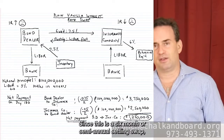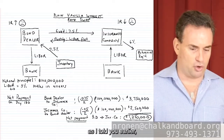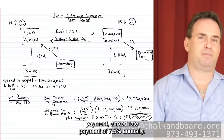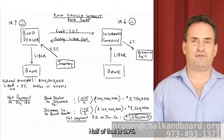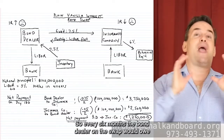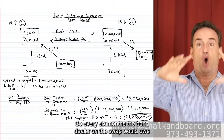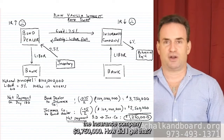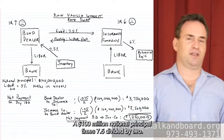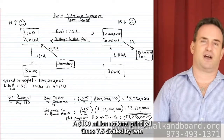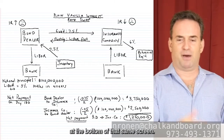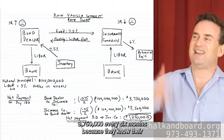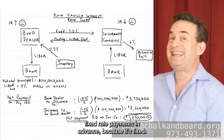Since this is a semi-annual settling swap, the bond dealer must make a fixed rate payment of 7.5% annually — half of that is 3.75%. So every six months the bond dealer on the swap would owe the insurance company $3,750,000. How? $100 million notional principal × 7.5% ÷ 2. The bond dealer knows their fixed payments in advance because it's fixed.